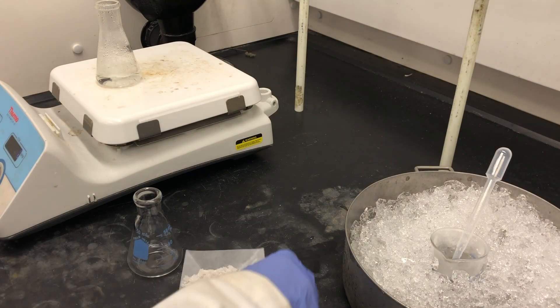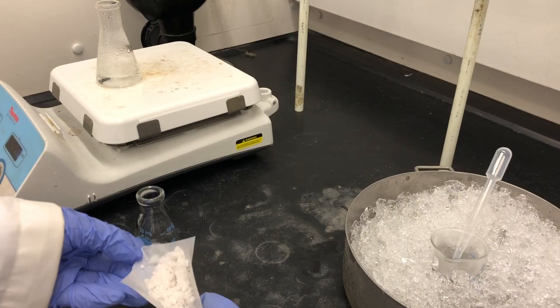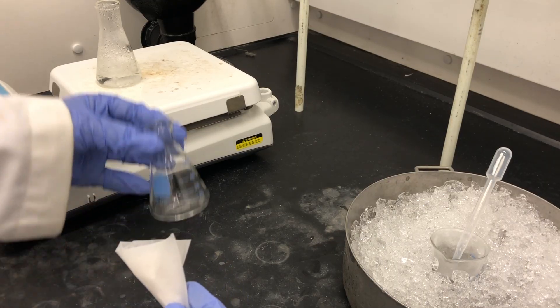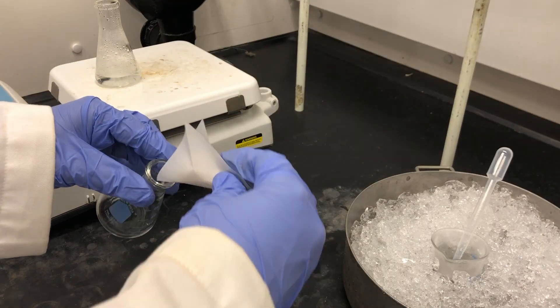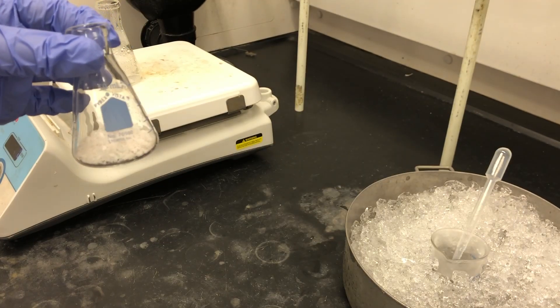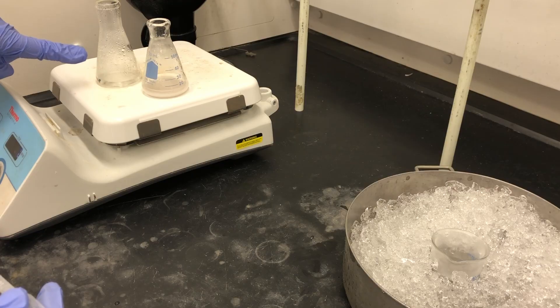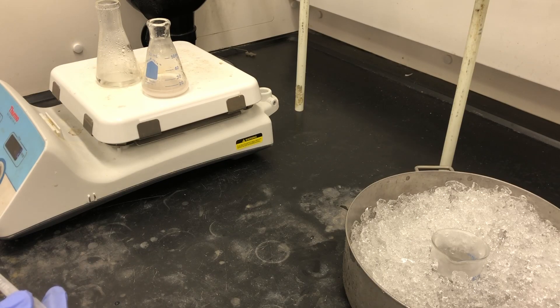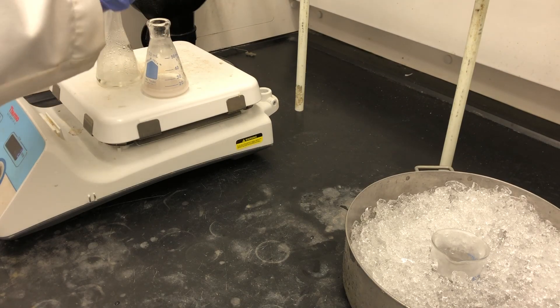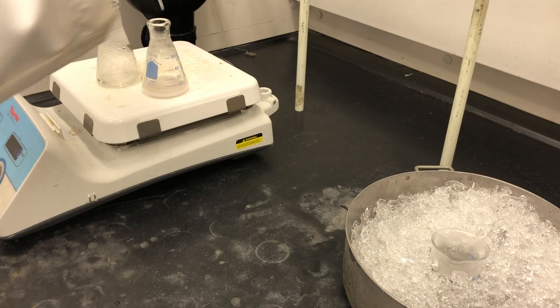Now it's time to recrystallize the crude product. We'll take the crude product and place it in a 50-milliliter Erlenmeyer flask. We're going to use a minimum amount of hot recrystallization solvent. It'll take about 3 milliliters of the recrystallization solvent per 1 gram of the crude product for this specific experiment, but it could vary slightly, so it's important to keep that in mind.